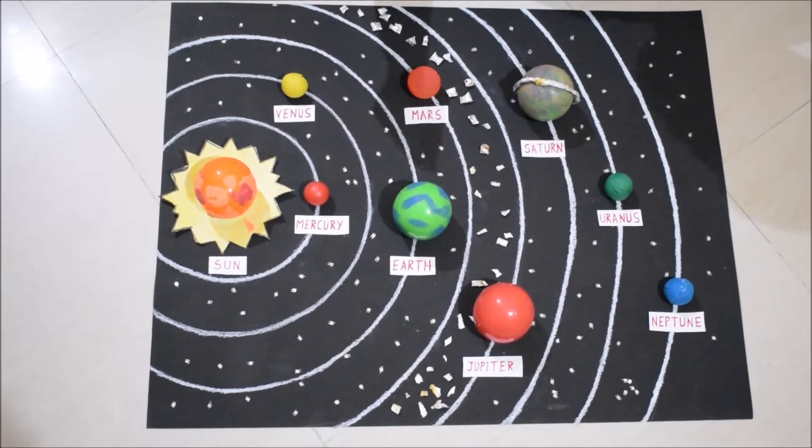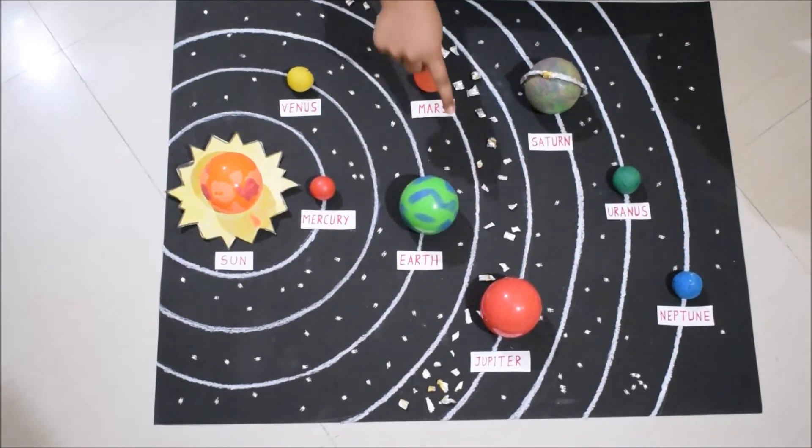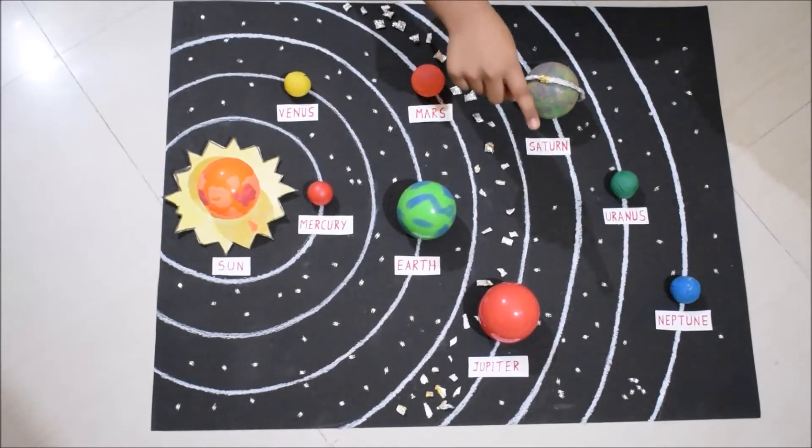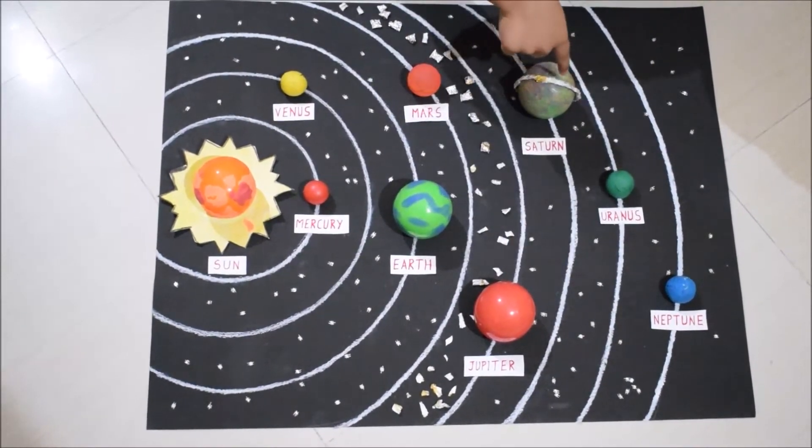The inner planets are Mercury, Venus, Earth, and Mars. The outer planets are Jupiter, Saturn, Uranus, and Neptune.